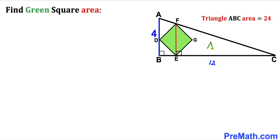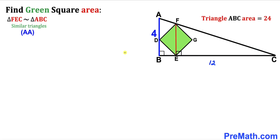Now let's focus on two right triangles: the smaller right triangle FEC and the bigger right triangle ABC. Triangle FEC is similar to triangle ABC by the Angle-Angle similarity theorem — both have a 90-degree angle, and angle C is common to both. Therefore we set up the proportion: FE divided by EC equals AB divided by BC, where AB is 4 and BC is 12.